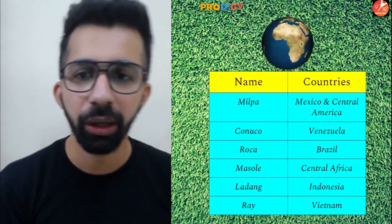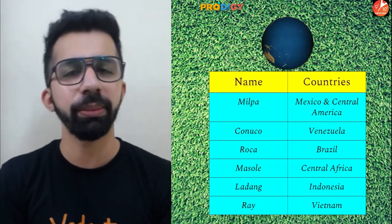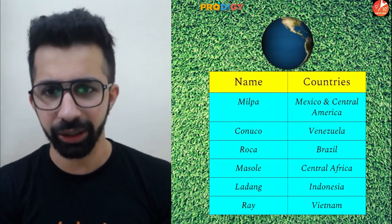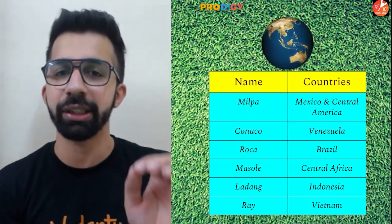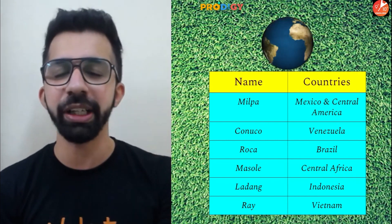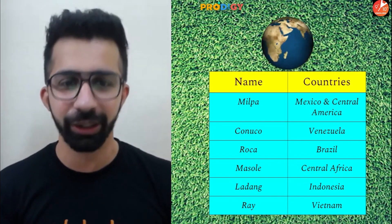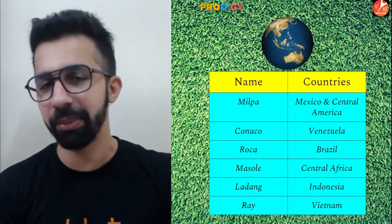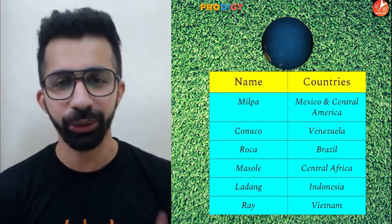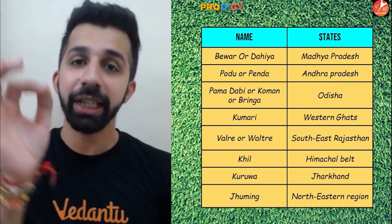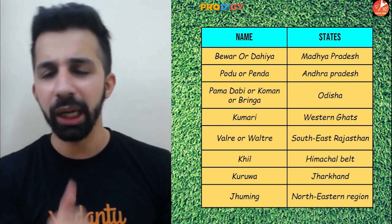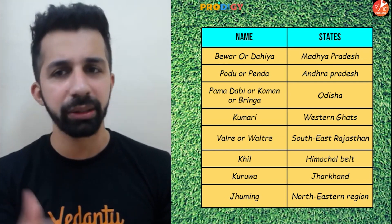The name of slash and burn agriculture is different in every country. You can pause the video to take a screenshot, make a note, or download the PDF from the description box after this session. There is also a list of the names used in different states of India — such as in Madhya Pradesh, Andhra Pradesh, Odisha, and the Western Ghats.